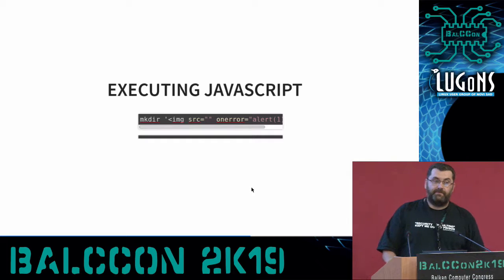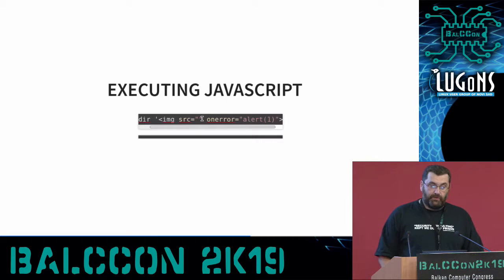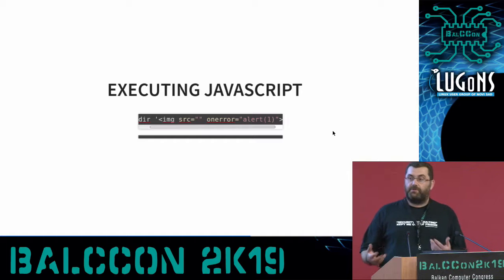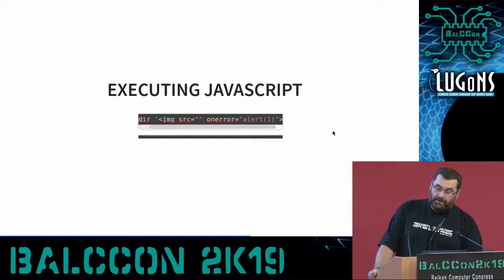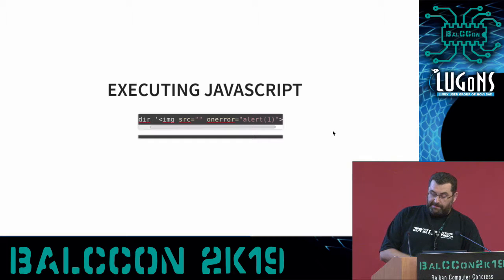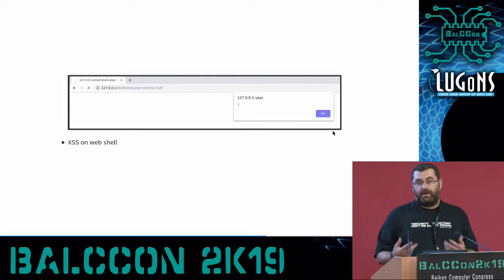Another thing is you can actually insert JavaScript. There's a neat trick when exploiting cross-site scripting: you can use the 'onerror' attribute, so that means if you cannot load this image — it's an empty one, so it won't load — it will execute this JavaScript. So I can now execute any JavaScript the browser will take and run on the attacker's side. I can enumerate the browser, see the referrer, uniquely fingerprint the browser, and so on.